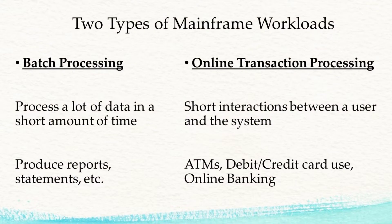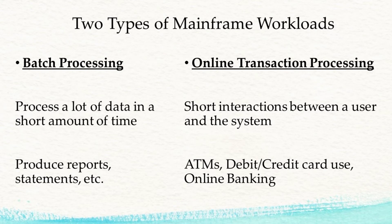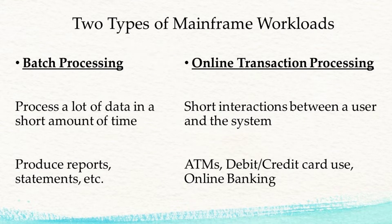The two types of mainframe workloads are batch processing, which processes a lot of data in a short amount of time. Batch jobs do their work and produce things like end-of-day reports and billing statements. Online transaction processing is typically a short interaction between a user and the system — for example, an ATM transaction or when you use your debit or credit card at the supermarket. We want our money where we want to pay and we want it done fast.